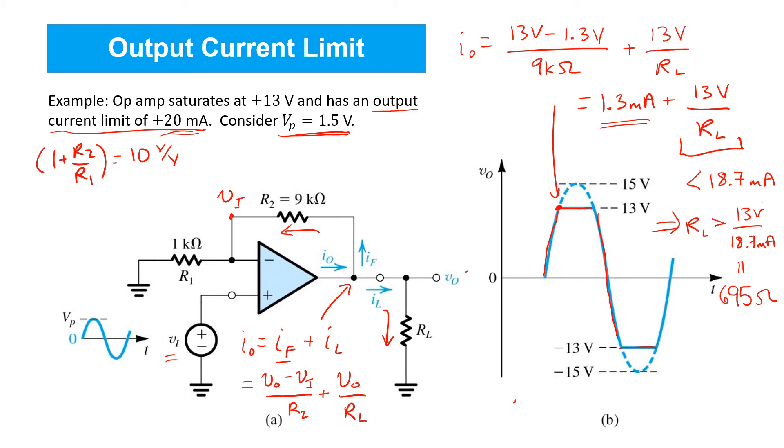What it means is that if RL is smaller than this value, the load current would be so high that the total current coming out of the op-amp would exceed its output current limit, and it wouldn't be able to deliver that much current. As a result, the output voltage would actually get limited, even below the saturation limit, and it would be limited because of its output current limit.